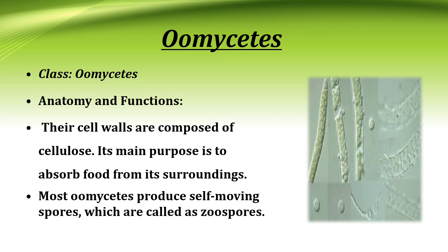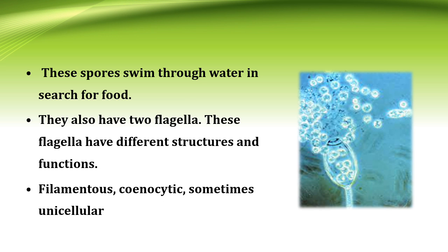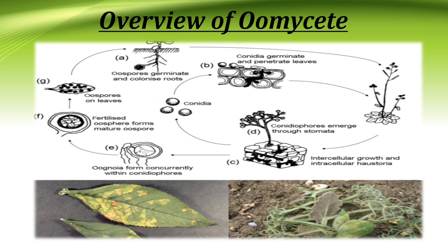Oomycetes anatomy and function: the cell wall is composed of cellulose, whose main purpose is to absorb food from its surroundings. Most Oomycetes produce self-moving spores called zoospores. These spores swim through water in search of food. They also have two flagella with different structure and function. Oomycetes are filamentous and coenocytic, sometimes unicellular.